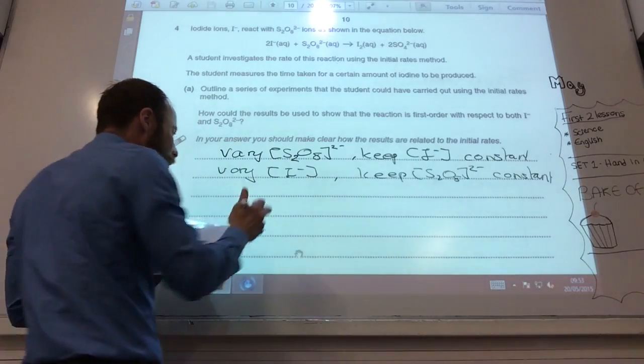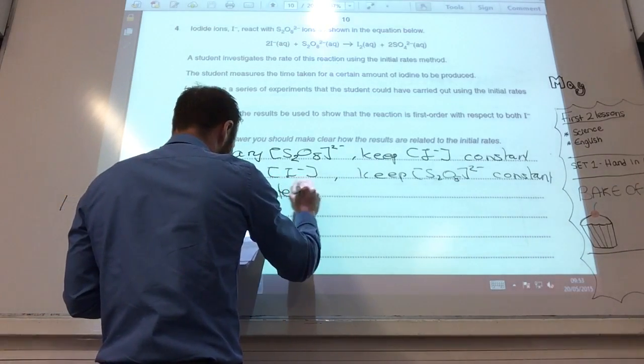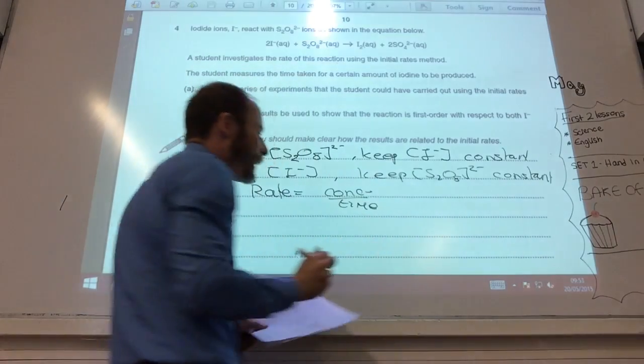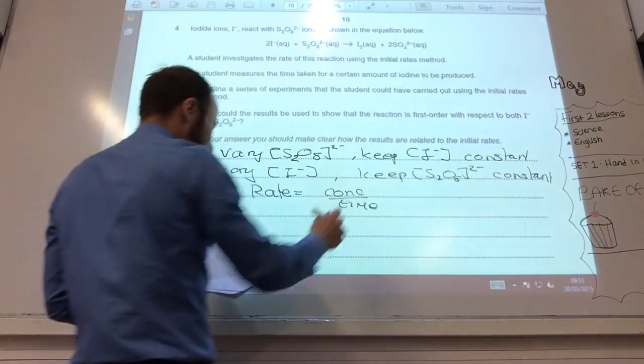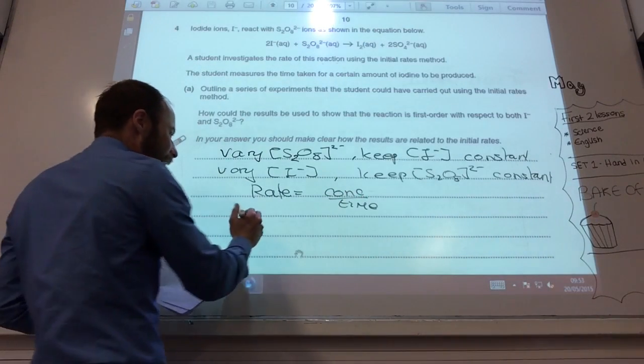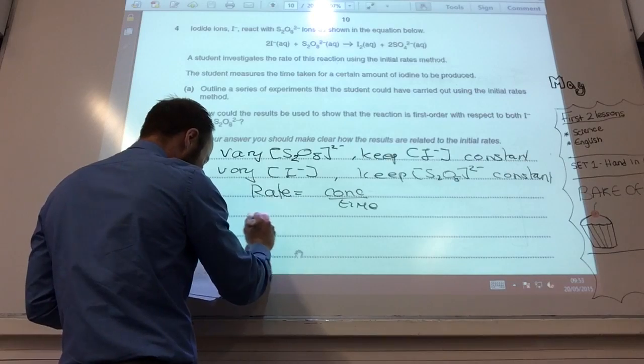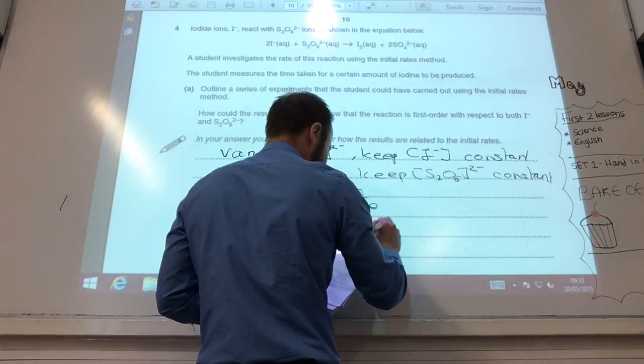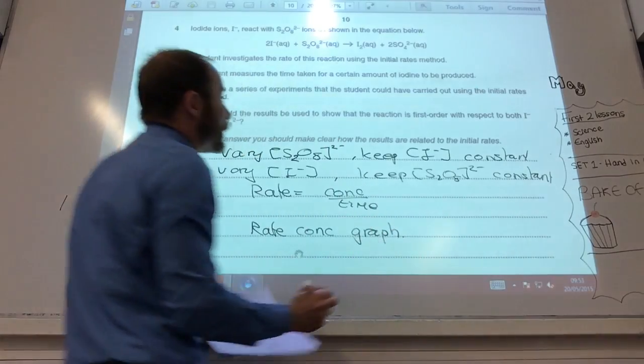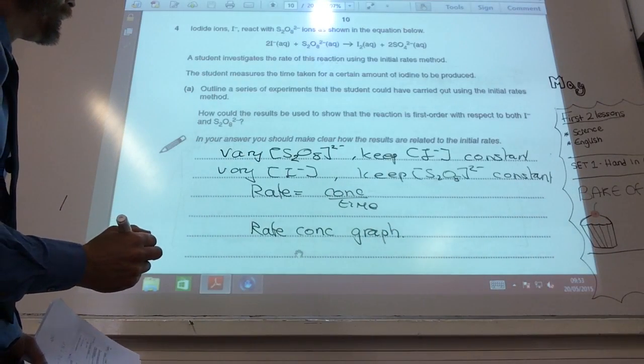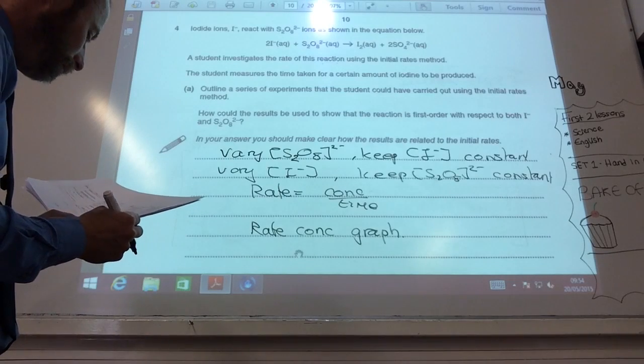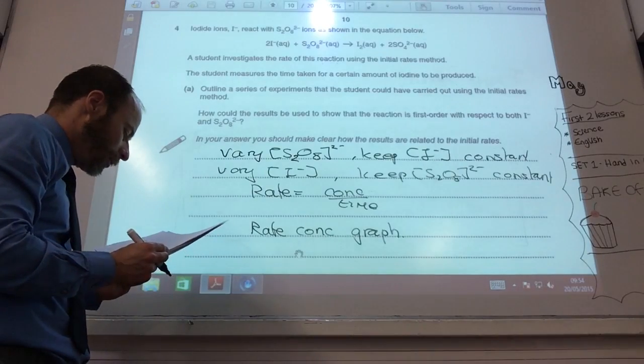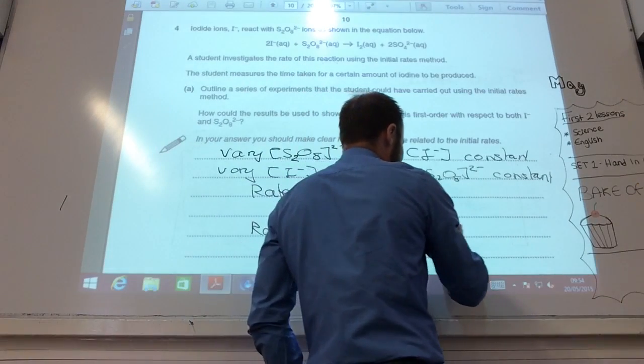Then, you know that the rate is equal to the concentration change over time. So, you have to tell them how you would then measure the rate. And then, you would do a rate concentration graph, which, if it's first order, would be a straight line through the origin.